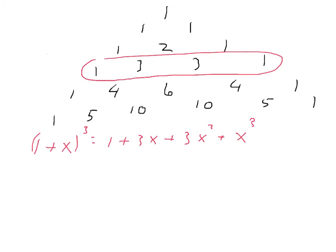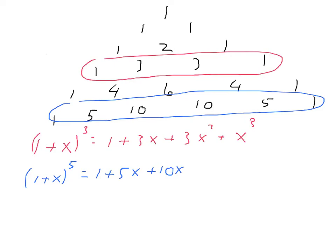And if you look at these here, those are the coefficients in the expansion of (1+x)⁵. It's 1 + 5x + 10x² + 10x³ + 5x⁴ + x⁵. Okay, I've just simply used the numbers that appear here. Those are the coefficients in this expansion.